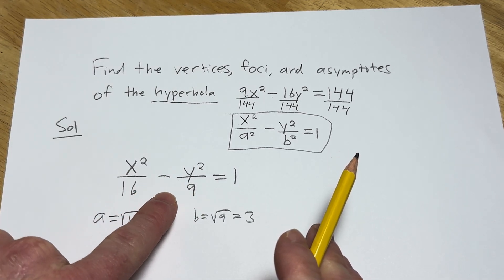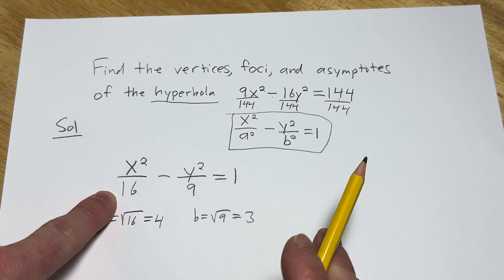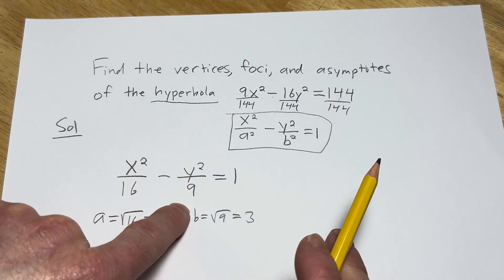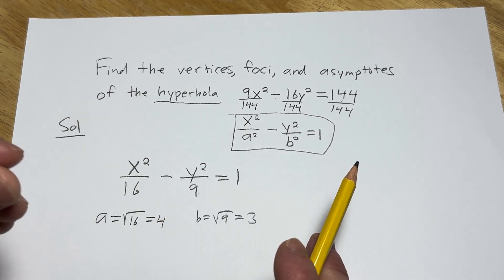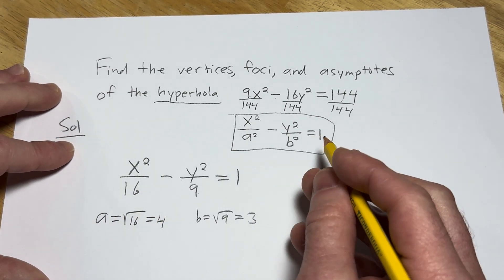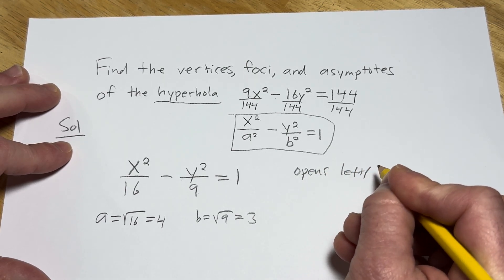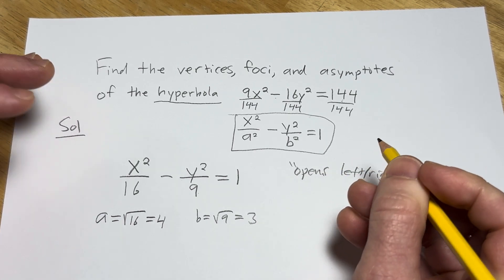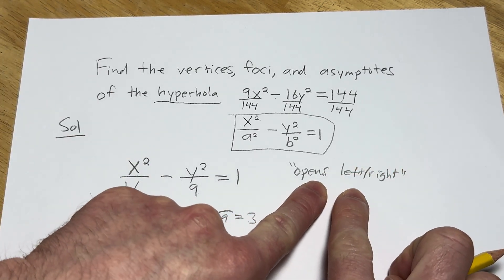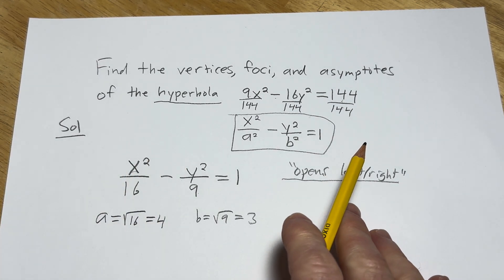Because the x comes first, the hyperbola opens left and right. If the y comes first, and there was like a minus here and an x, so if it was y squared over 9 minus x squared over 16, then it would open up and down. X comes first, opens left and right. Y comes first, opens up and down. So I like to write it down: Opens left, right. I actually write it down when I'm working it out because it's very important to know that when the x comes first, it opens left and right. That's how you know how to graph it.